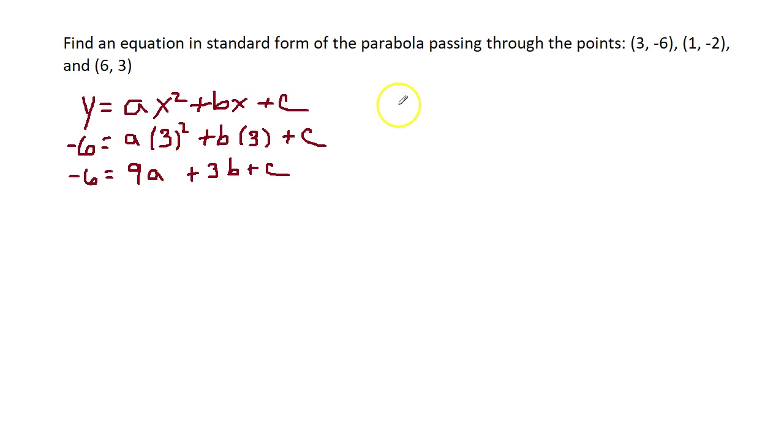Plugging in to y equals ax squared plus bx plus c, we have negative 2 equals a times 1 squared plus b times 1 plus c. Well, negative 2 equals a plus b plus c.